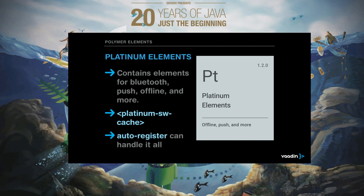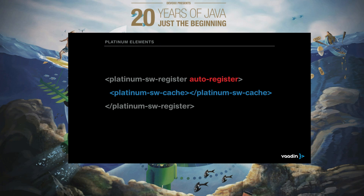Today I want to focus on one of the Polymer element groups called the platinum elements. They are very interesting because they port important functionalities found in any mobile device — like Bluetooth, messaging, push, and so on. And one more thing: caching. If you use the Platinum SW cache element, you can have part or all of your web application cached in the browser, out of the box. You use Platinum SW register with only three lines of HTML code and your entire web application is cached.